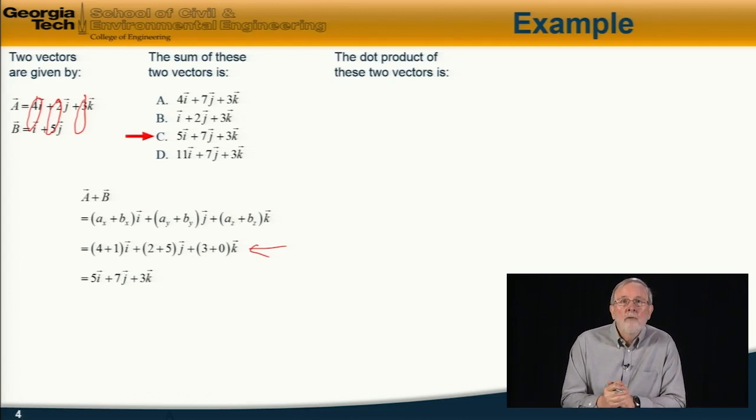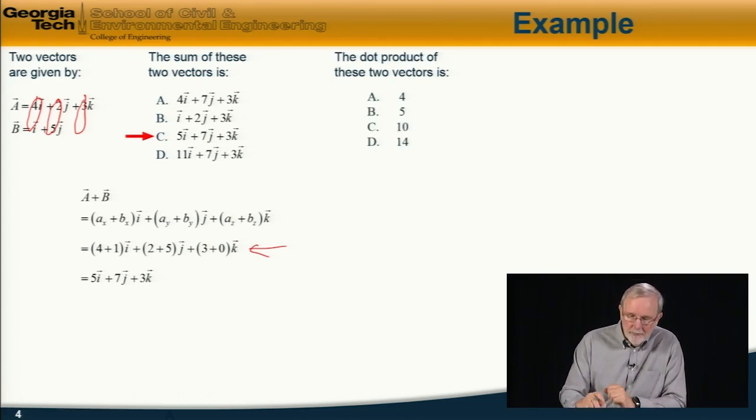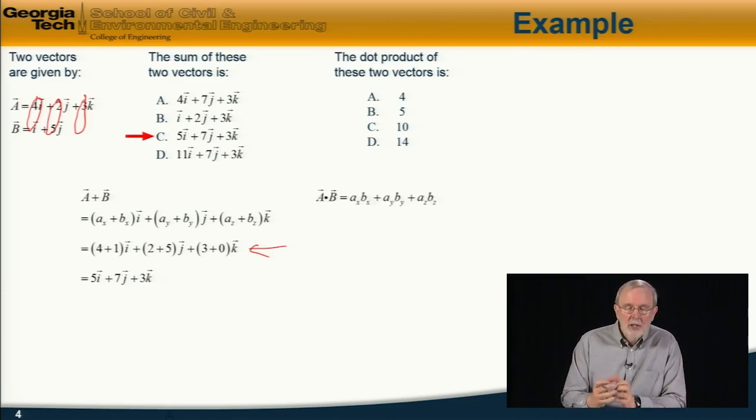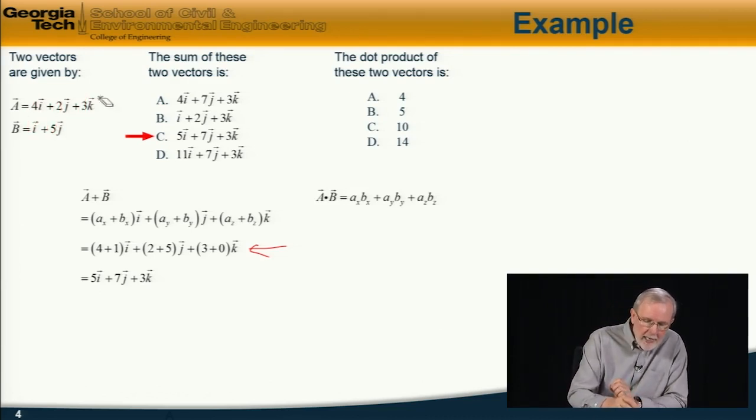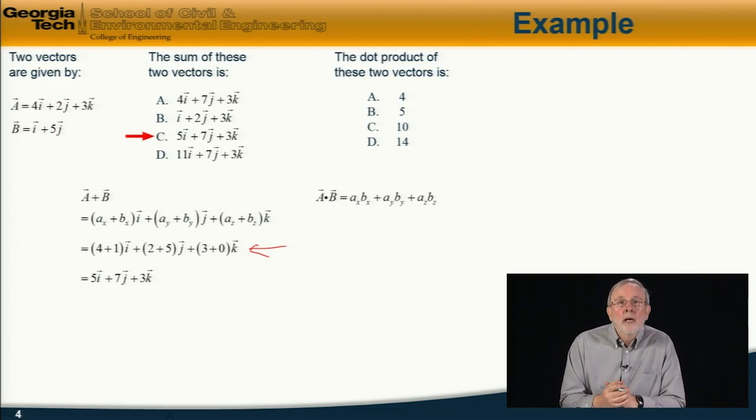Next question, form the dot product between those two vectors. Which of these is it? And of course, this is a scalar quantity. So we use our general relationship that the dot product, a dot b, is equal to the sum of the products of the individual components.